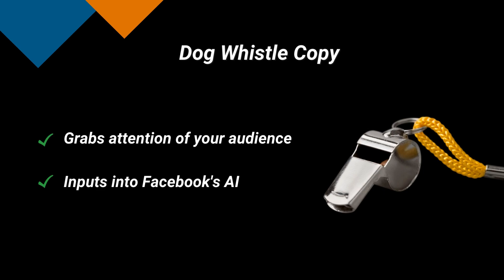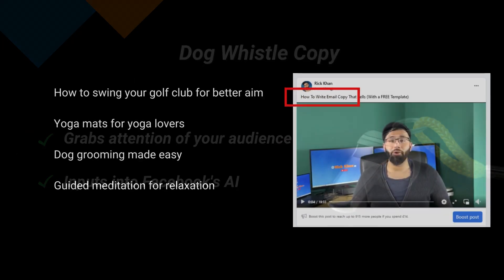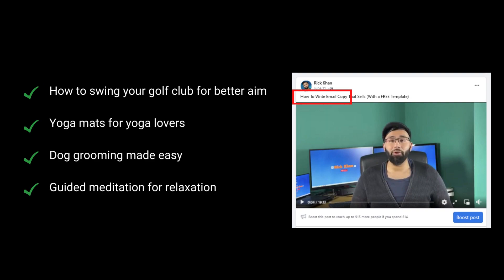At the beginning of the copy, I advise you use broad terms that shout out your audience. This is also known as dog whistle copy, a term coined by Dan Kennedy. This will do two things: one, it grabs and filters your prospect's attention; and two, it puts an input into the Facebook AI that lets the algorithm pick up exactly who they need to start looking for. Examples include: how to swing a golf club for better aim, yoga mats for yoga lovers, dog grooming made easy, guided meditation for relaxation.